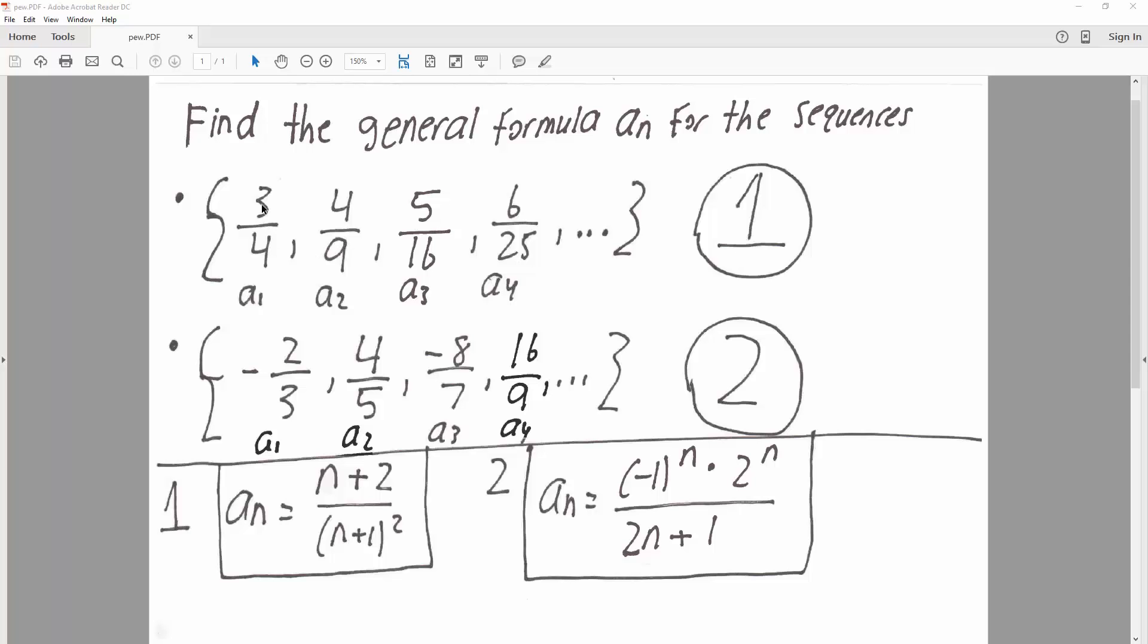And since I know we have 3, and we start off with a1, maybe it's going to be n plus 2 for the numerator. So if I say n plus 2, if I do 2, we'll get 4, 3, we get 5. So that's correct. So I can say n plus 2 should be the numerator.